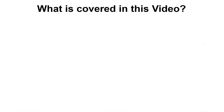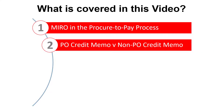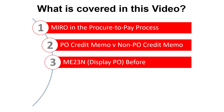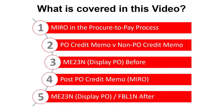Here's our list of topics. First, we'll confirm where Transaction Code Miro fits in the Procure2Pay process, followed by an explanation of the difference between a credit memo referencing a purchase order and a non-PO credit memo. Before posting, we'll review the status of the purchase order using Transaction ME23N, Display Purchase Order. We'll then post a credit memo in SAP using Transaction Miro, and finally review the purchase order status again and analyze the vendor line item display, Transaction FBL1N.